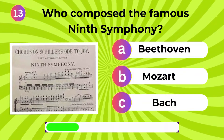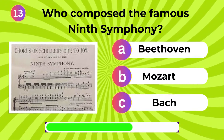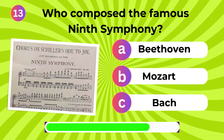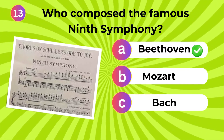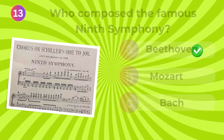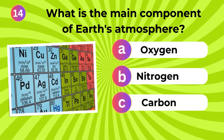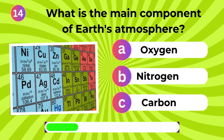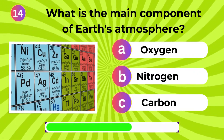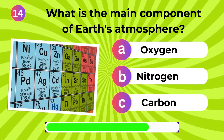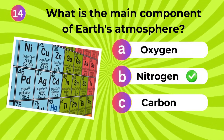Who composed the famous Ninth Symphony? Beethoven. What is the main component of Earth's atmosphere? Nitrogen.